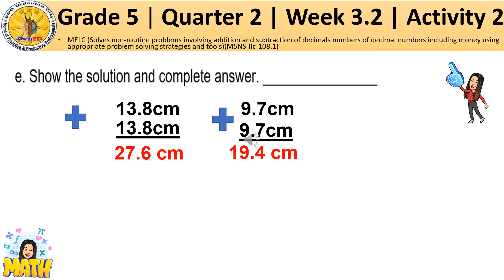we have to add the sum of the given numbers. 27 and 6 tenths centimeters plus 19 and 4 tenths centimeters is equal to 47 centimeters.